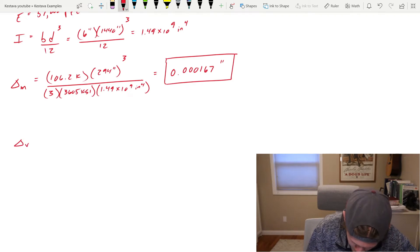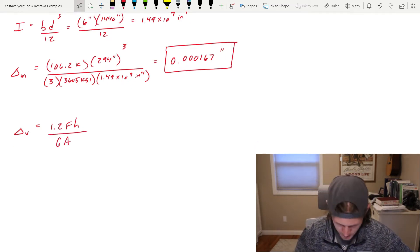Now we need to find deflection due to shear. And as I said above, that's 1.2 FH over GA. Well, let's find our variables.